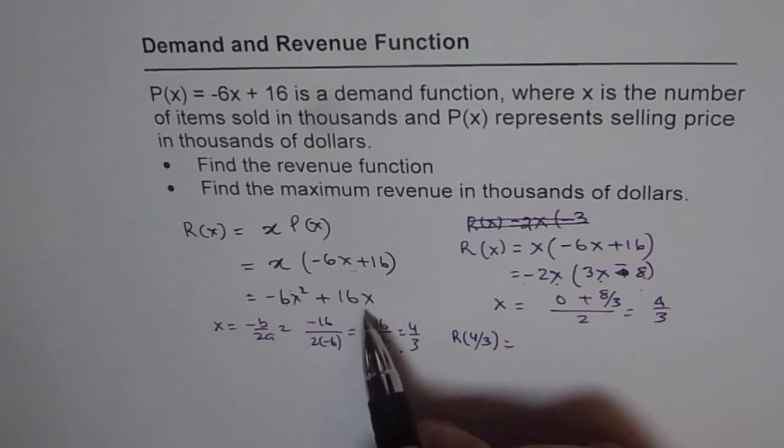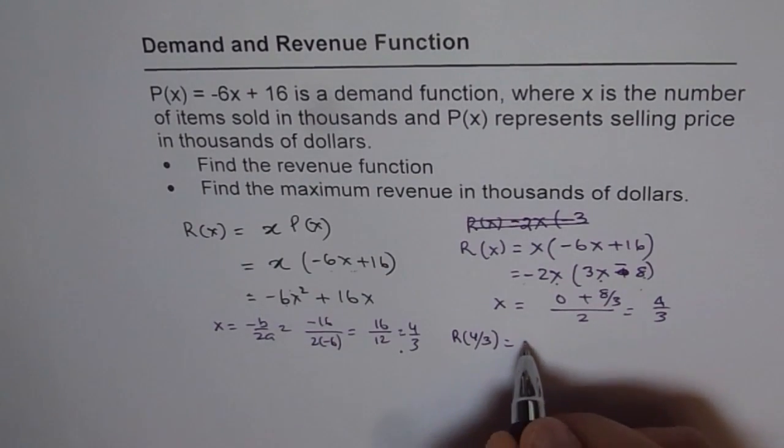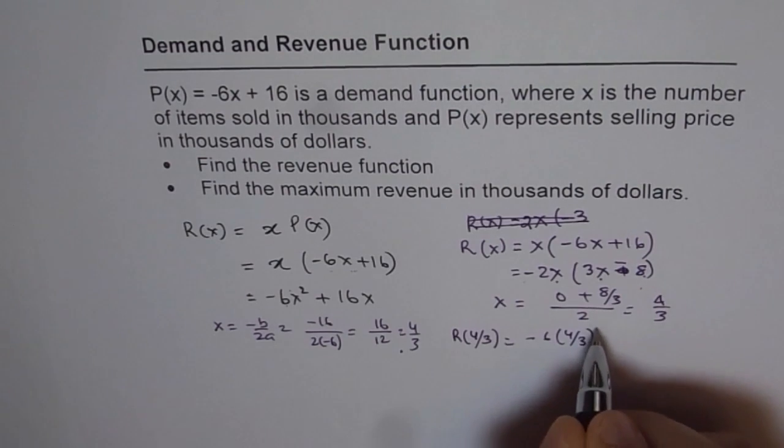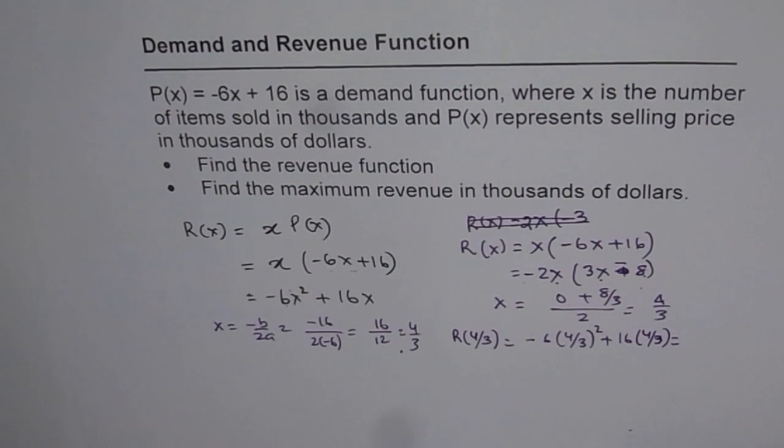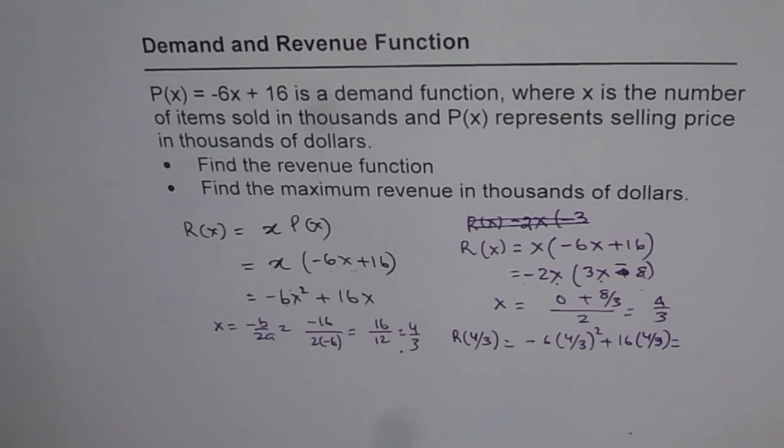Write -6(4/3)² + 16(4/3). Using a calculator: 4 divided by 3, squared, times 6 with a negative sign, then add 16 times 4 divided by 3, which gives you 10 and 2/3.